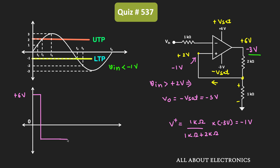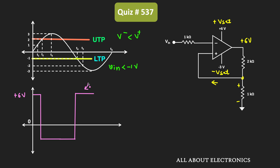Once the input signal goes below -1V, V- becomes less than V+, and the output voltage switches back to +6V. In this condition, V+ returns to +2V. Now, unless the input voltage rises above +2V again, the output remains +6V. This holds up to point t6.